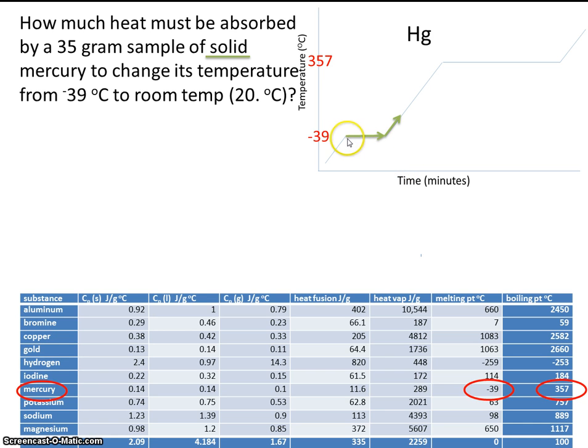So this is the fusion plateau, so we're going to need the heat of fusion, which is 11.6 for mercury. And this is mercury as a liquid, so we're going to need the specific heat capacity for mercury as a liquid.